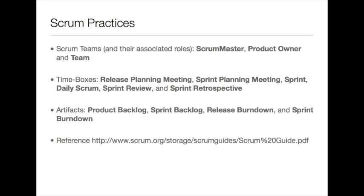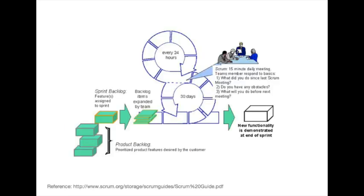How does Scrum and XP differ? Both frameworks place a different emphasis on process. Commonly, Scrum is described by the Scrum roles, events or meetings, and the artifacts. The diagram you see here is one of the more common diagrams that summarizes the Scrum process and was taken from Ken Traber's first book.